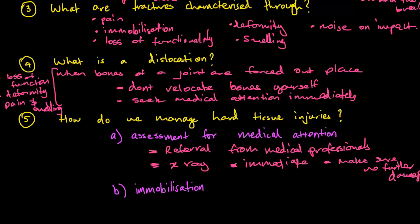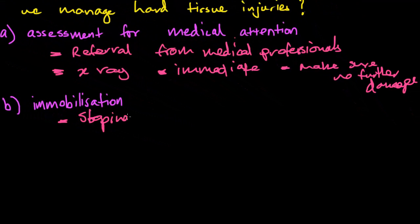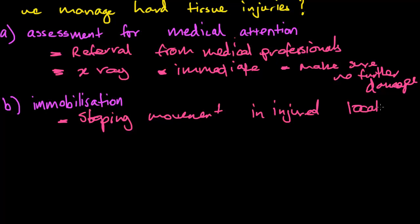Lastly, I'd just like to talk about the immobilization approach. The immobilization approach is just exactly what it means. It's making sure that the bone or dislocated area doesn't actually move. It's stopping movement in that area. So stopping movement in the injured location. And by doing that, what you're actually doing is you're preventing further damage.